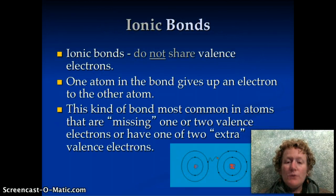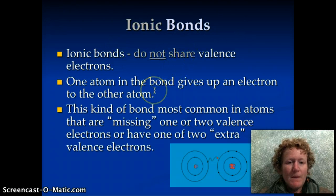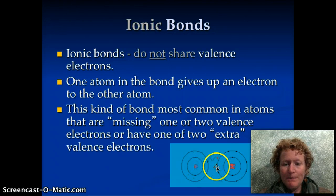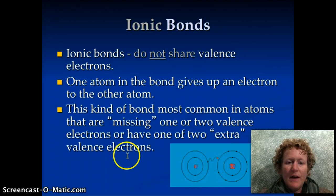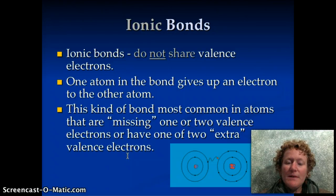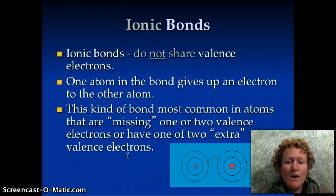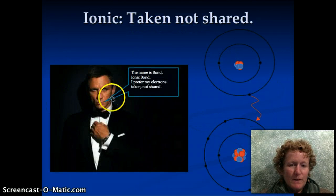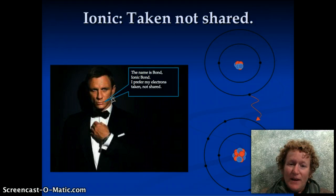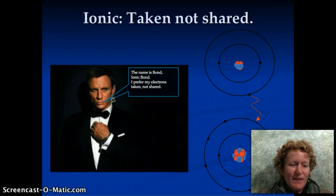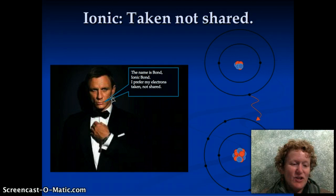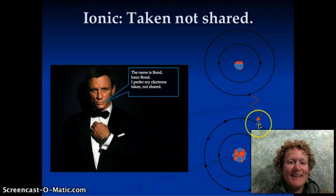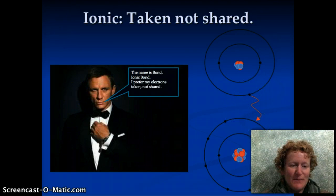Ionic bonds do not share valence electrons. One atom in the bond gives up an electron to the other atom. Here, you can see that happening. This kind of bond is most common in atoms that are missing one or two valence electrons or have one or two extra valence electrons. You can think of ionic bond, he prefers his electrons taken, not shared. You can see the electron that's taken, not shared, right here between two atoms.